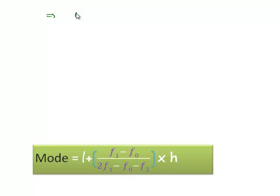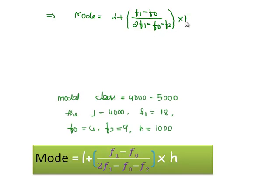As we have known all the values, we know that the formula for mode is L plus, within brackets, F1 minus F0 by 2F1 minus F0 minus F2, whole bracket into H.